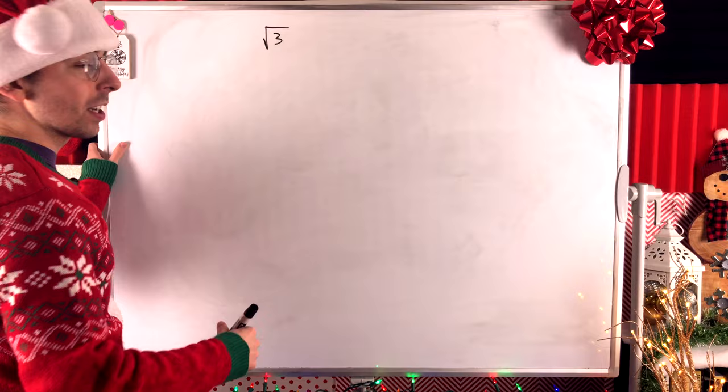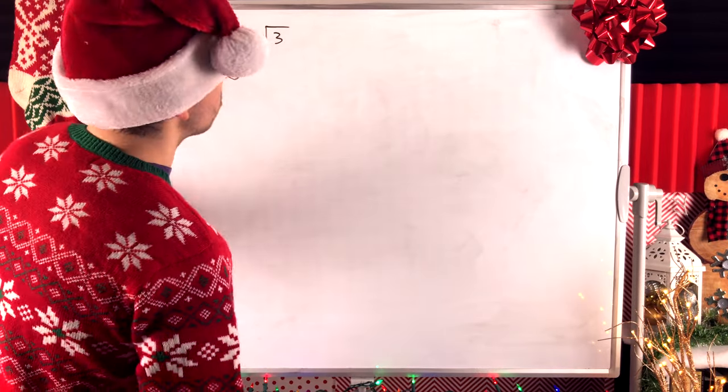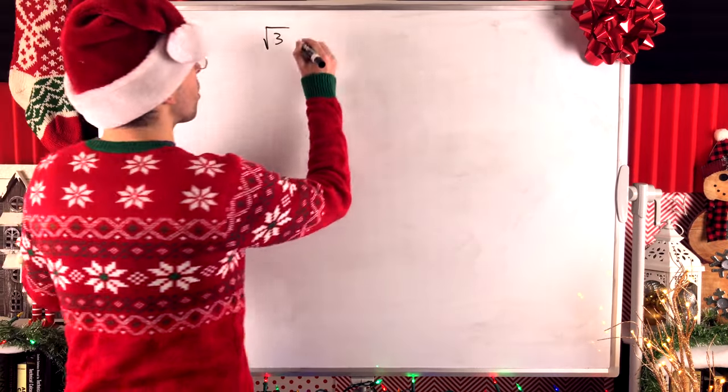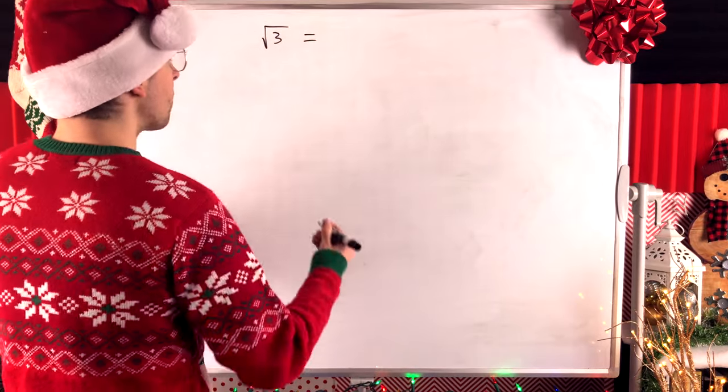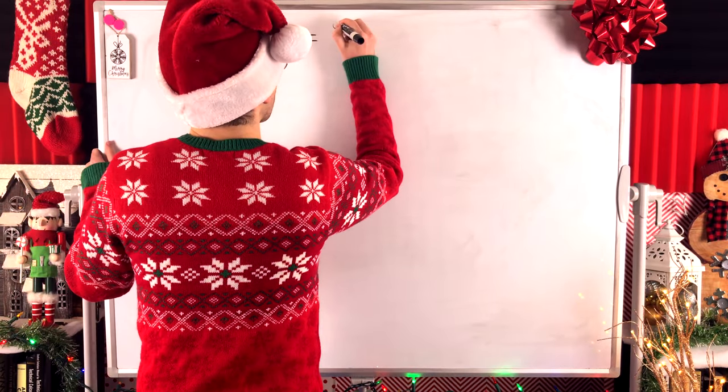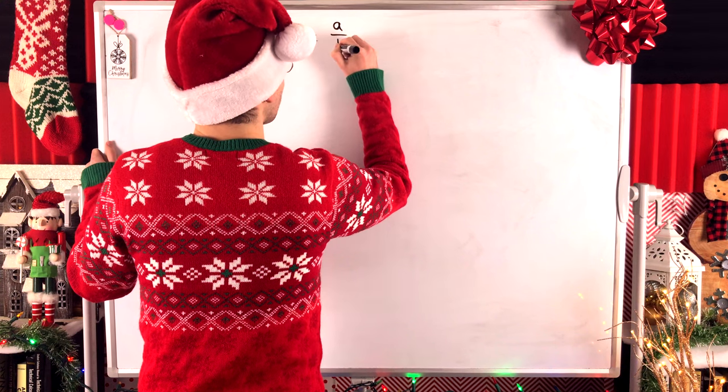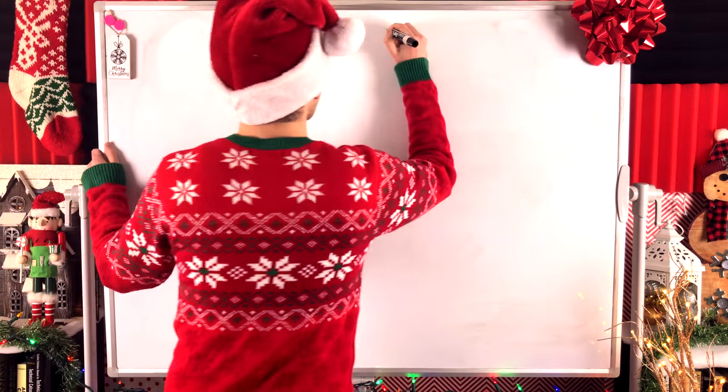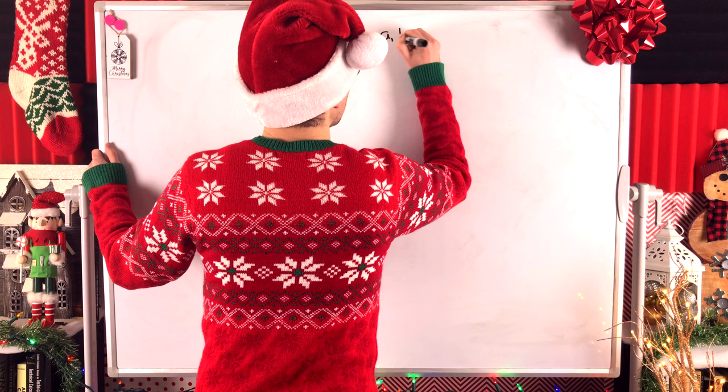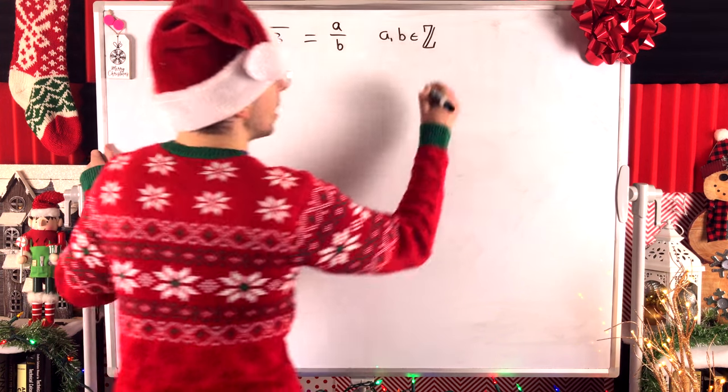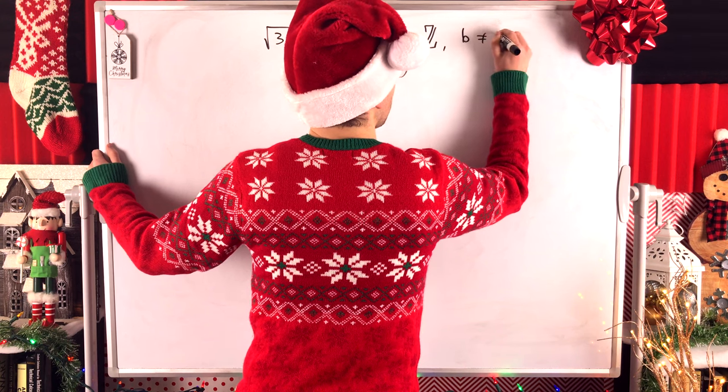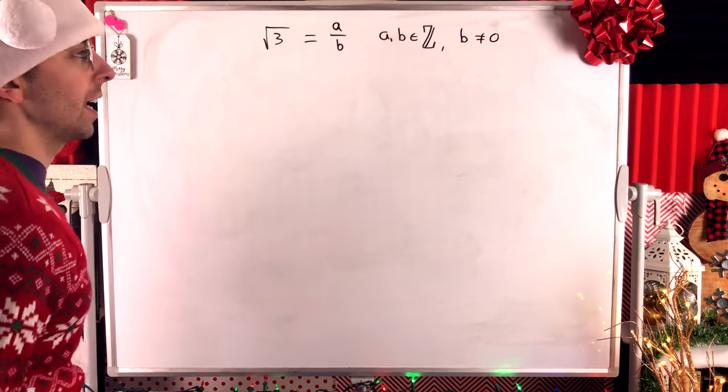So, it's a proof by contradiction, just like the classic square root of 2 proof. We assume, for the sake of contradiction, that the square root of 3 is rational. And thus, we can write it as the ratio of two integers, say, A over B, where the restrictions, of course, by definition of a rational number, A and B have to be integers.